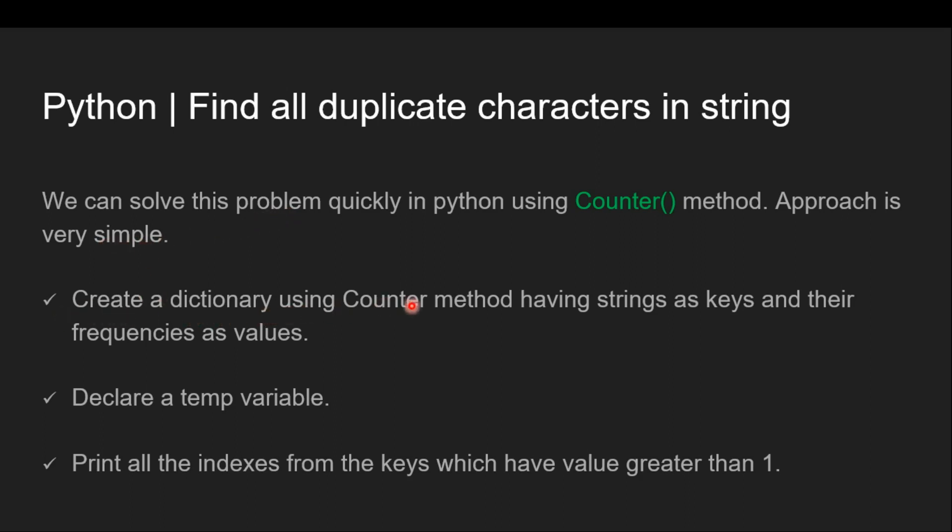First we need to create a dictionary using counter method which contains strings as keys and their frequencies as values. Then we will declare a temporary variable. Finally, print all the indexes from the keys which have value greater than one.